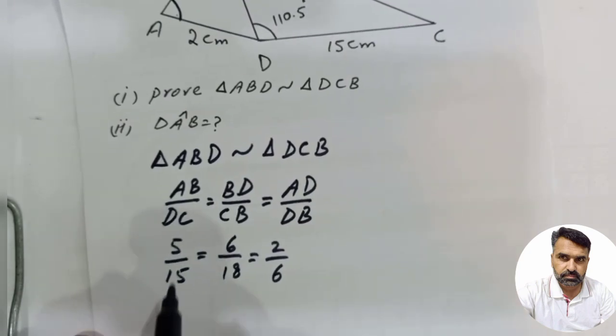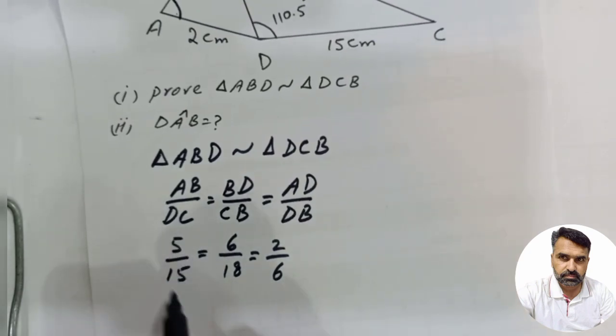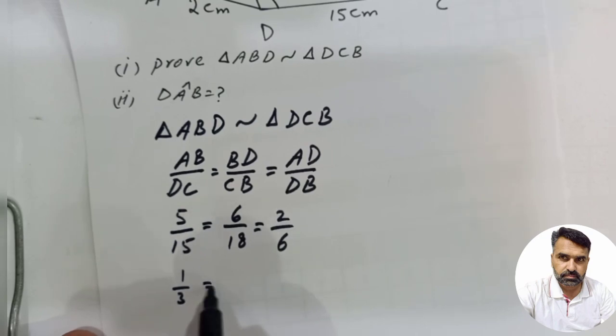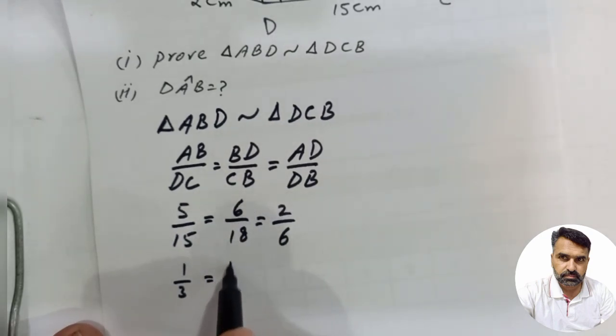5 over 15 simplifies to 1 over 3. 6 over 18 is 1 over 3. And 2 over 6 is 1 over 3.